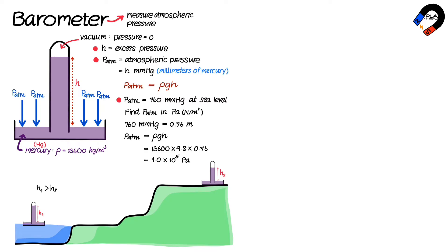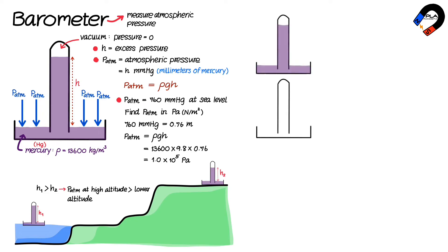If the barometer is placed at a higher altitude, the length of the mercury column decreases because the atmospheric pressure decreases. If there are some air particles at the top inside the tube, the pressure there is not zero, causing the barometer reading to be less than the actual atmospheric pressure.